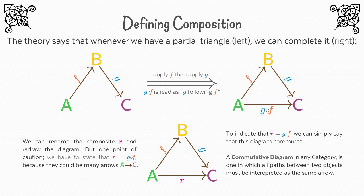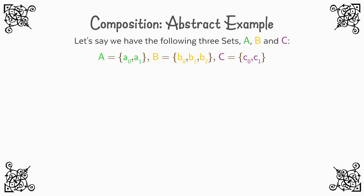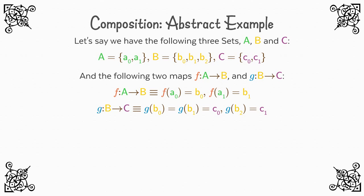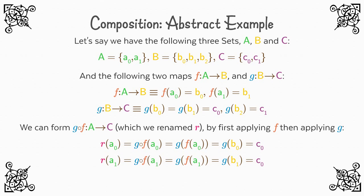For an abstract example of composition before we return to Music S: let's say we have three sets and two maps — F from A to B, and G from B to C. The theory tells us we can form G following F from A to C, which we rename R, by first applying F then applying G. So R(a0) = G(F(a0)) = G(b0) = c0, since F(a0) = b0. And R(a1) = G(F(a1)) = G(b1) = c0, since F(a1) = b1. Note that since we write functions on the left of what we apply them to, the rightmost function is applied first and the leftmost last — so G following F means F first, then G.